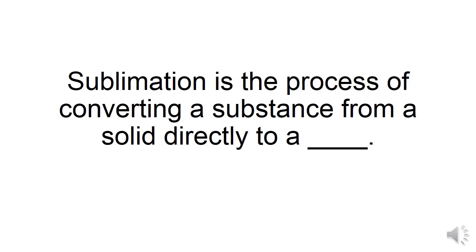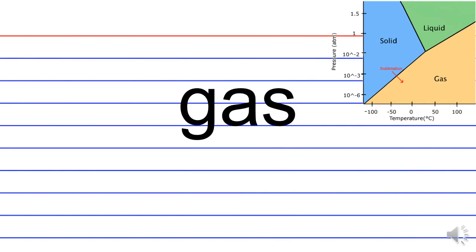Sublimation is the process of converting a substance from a solid directly to a blank. Sublimation is the process of converting a substance from a solid to a what? The answer is gas — it's the process of converting a substance from a solid to a gas.